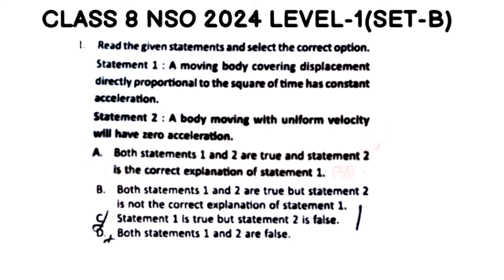We have two statements and four options. Statement 1 says displacement is directly proportional to the square of time, so s is proportional to t-squared, meaning acceleration is constant. Statement 2 says a body moving with uniform velocity will have zero acceleration, which is also correct.